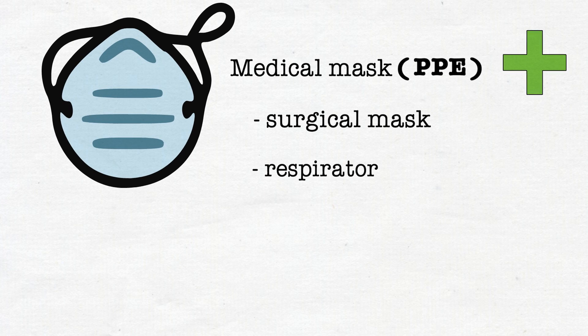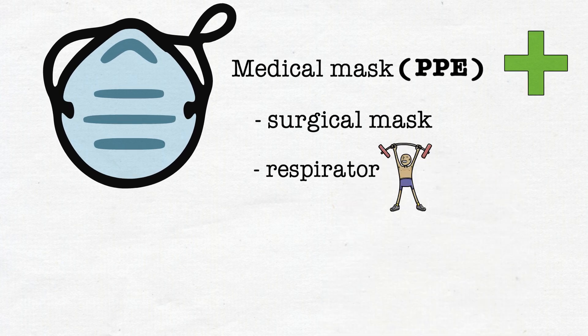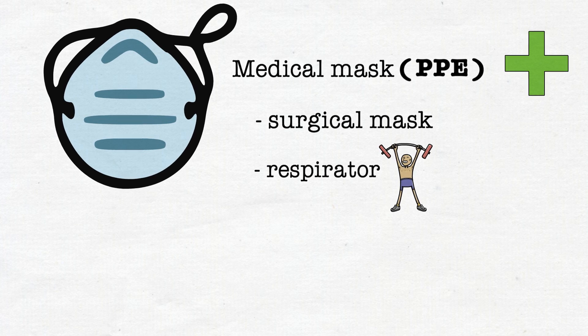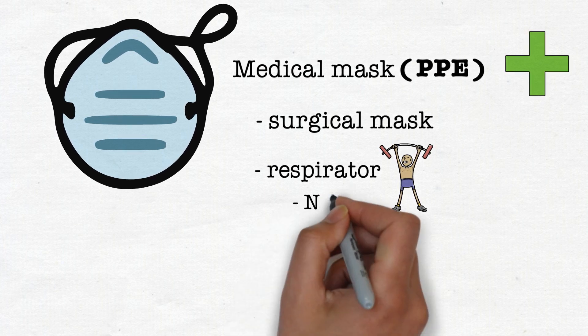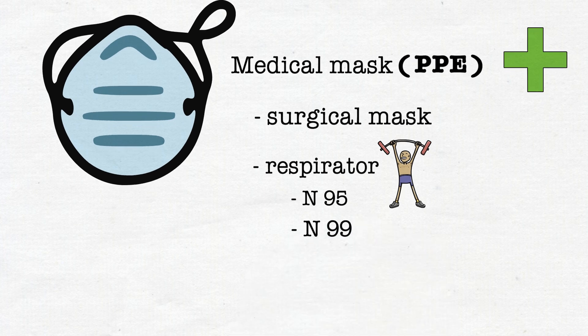So what is the difference between the two? Respirator masks are more strongly designed than surgical masks. And as the name suggests, they contain a respirator that prevents much smaller particles from passing through. Two of the most common respirator masks are N95 masks and N99 masks, which when used correctly, prevent 95% and 99% of airborne particles from passing through.